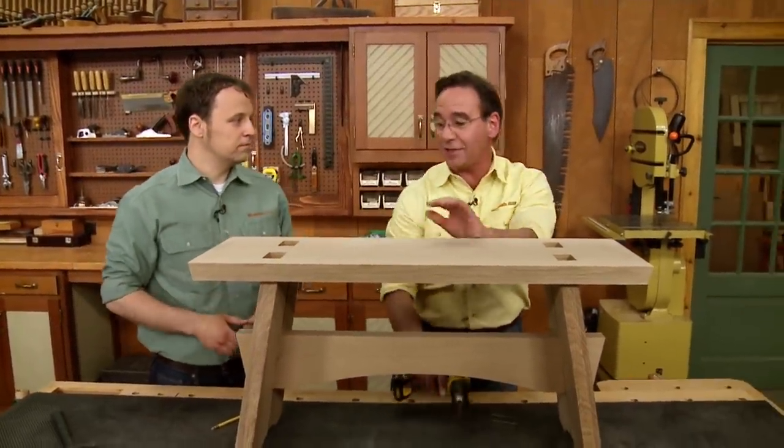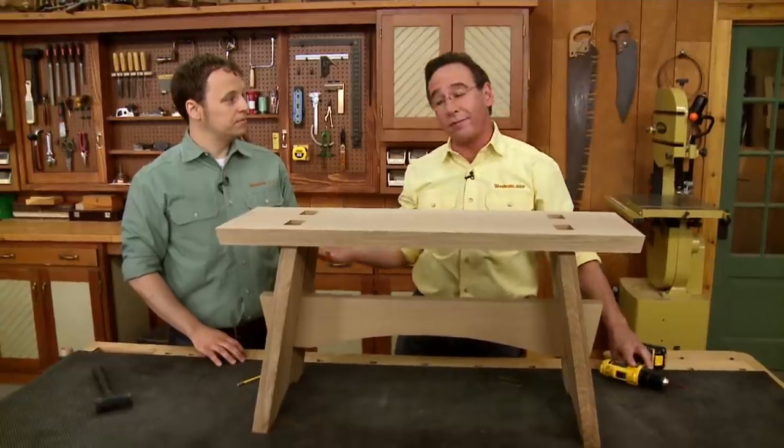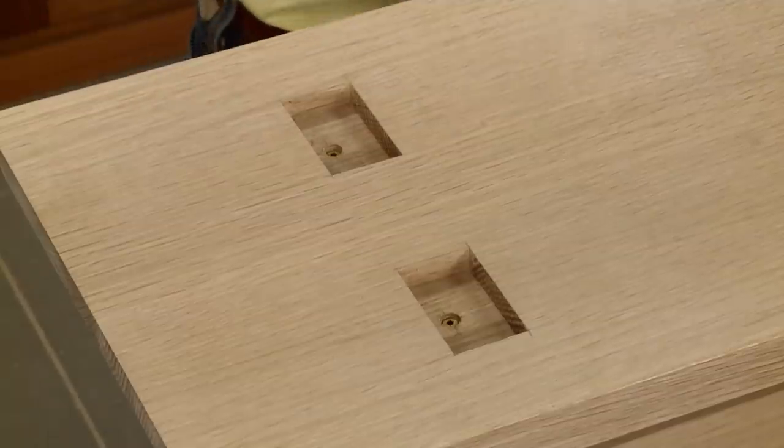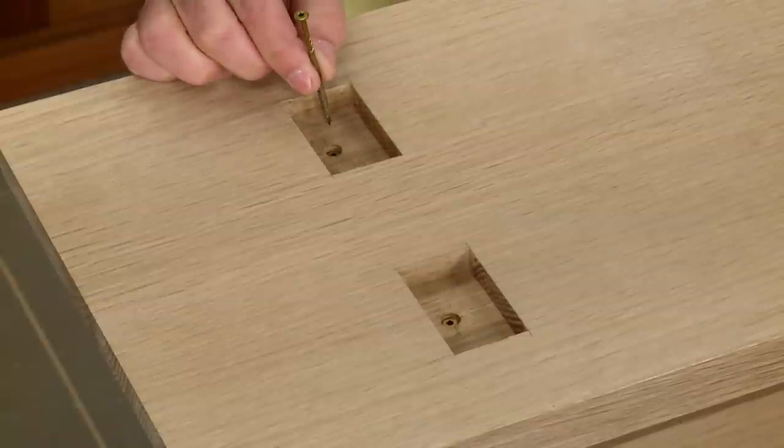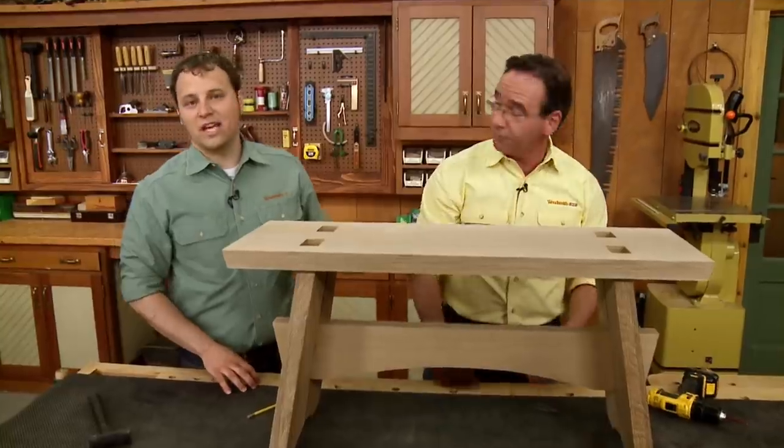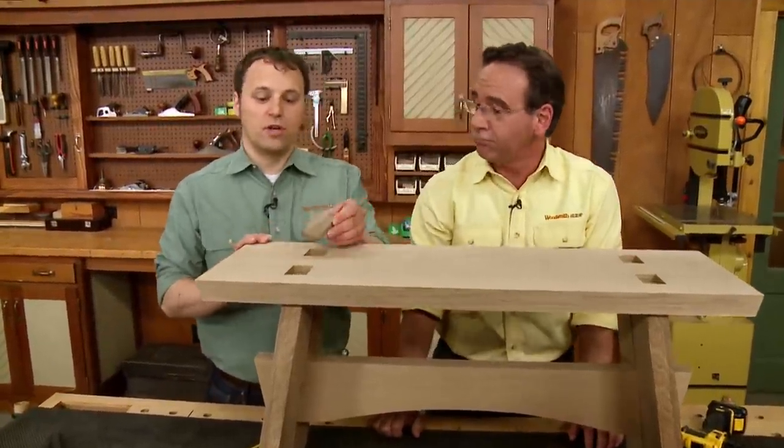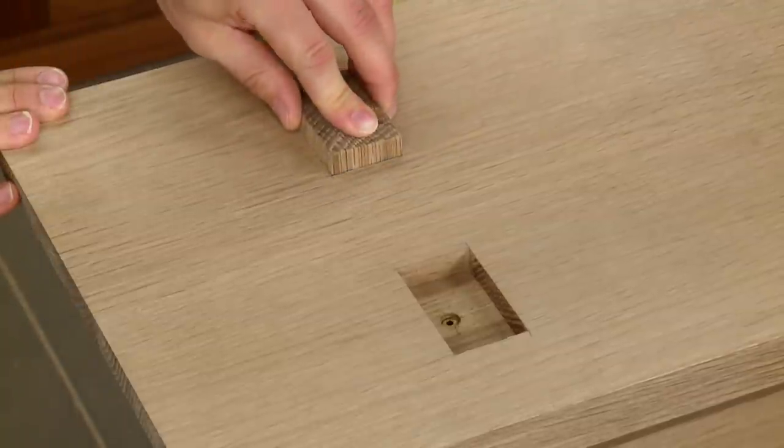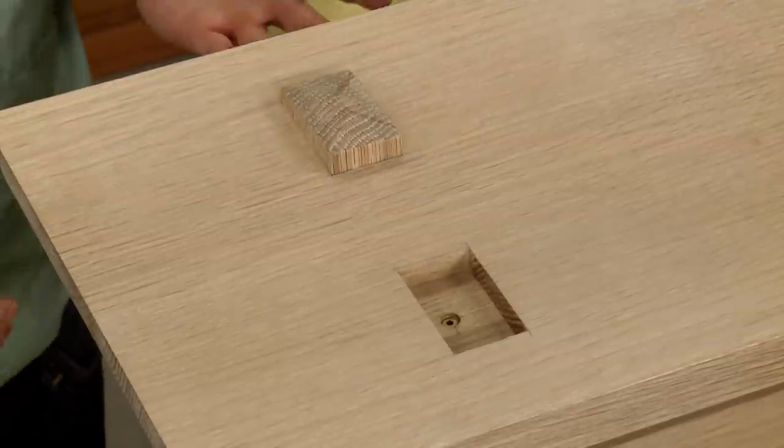All right, Phil. Well, I've just finished attaching the top here. And to do that, I drilled some pilot holes and then attached everything with a long screw like this. Well, the next step is to fill the mortises with these false tenons. They just fit right into place like that, and I made those at the table saw.